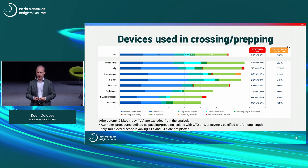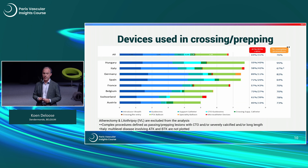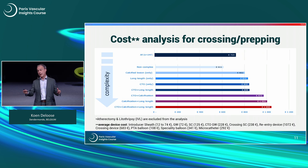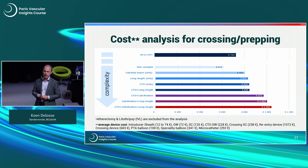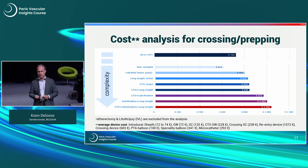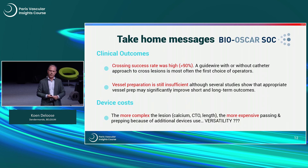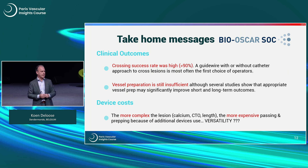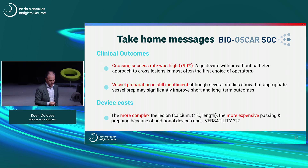The devices used are summarized here — some countries use more devices than others, and the complexity of the procedure is clearly reflected in the amount of materials used and in the cost analysis. Mean average device costs were counted per country, and clearly for the most complex lesions, the higher the price to do the procedure. So now with this BioOscar SOC data, we can compare with BioOscar results we are currently collecting. Crossing success is already good; vessel preparation is still insufficient; and the more complex the lesion, the more expensive the procedure. Thank you.